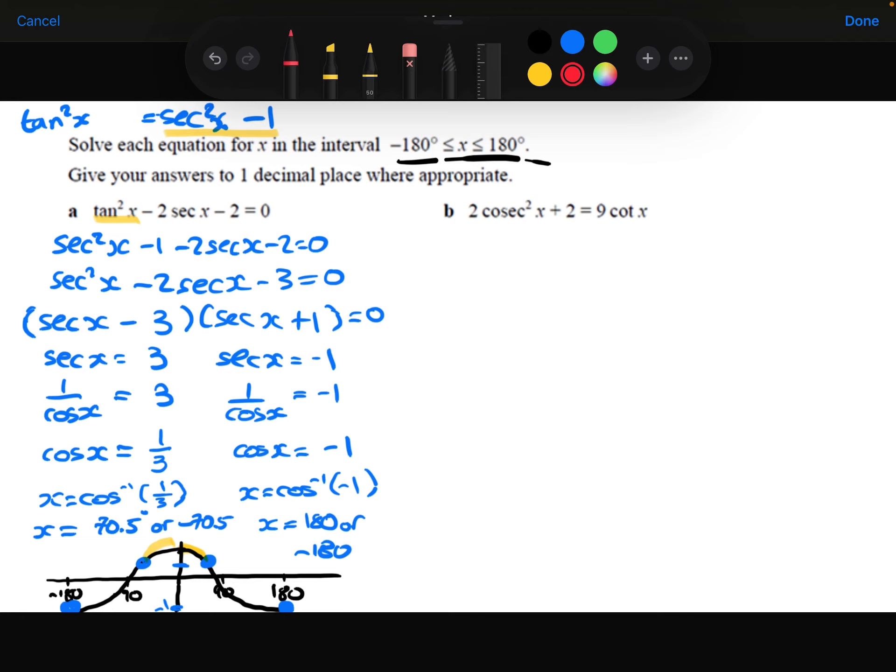Part B, we want an identity that links cosec and cot. That identity is cosec squared theta is equal to cot squared theta plus 1. So we're going to replace this cosec squared theta with the cot squared theta plus 1.